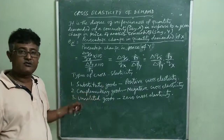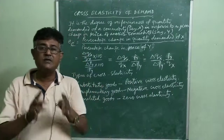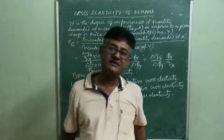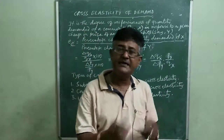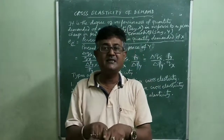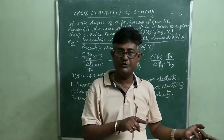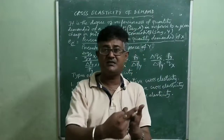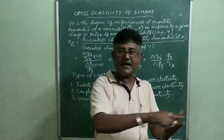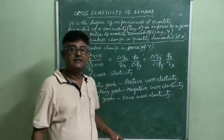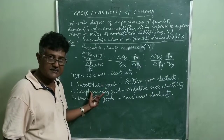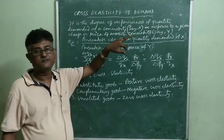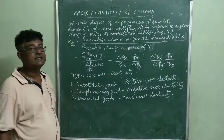Complementary goods are those which are jointly demanded to satisfy a particular want, and one cannot be used unless the other is available — for example, pen and refill. In case of complementary goods, there exists an inverse relationship between the price of one good and the demand for the other. With a change in price of Y, the demand for X will fall, so the cross elasticity of demand will be negative.